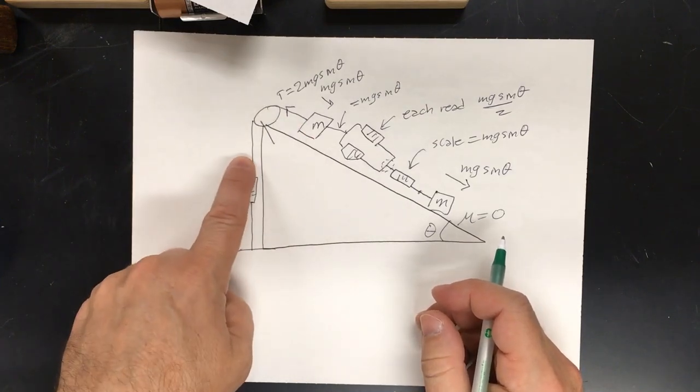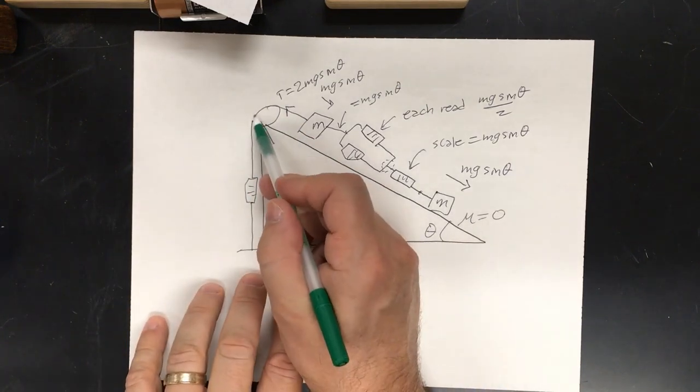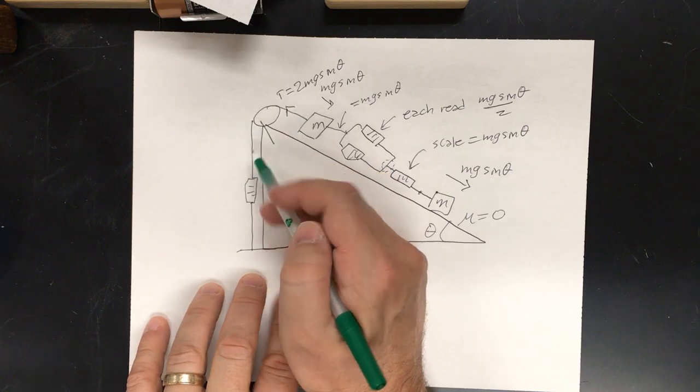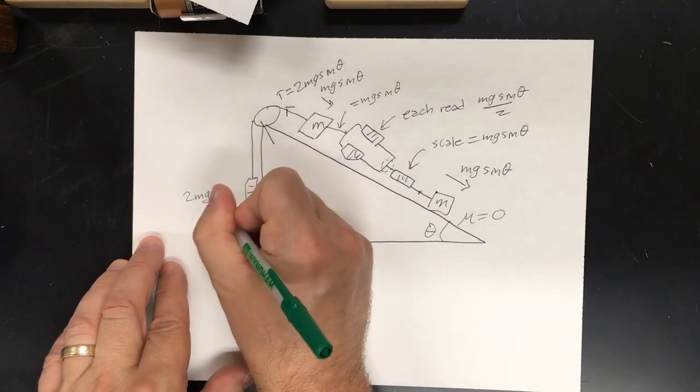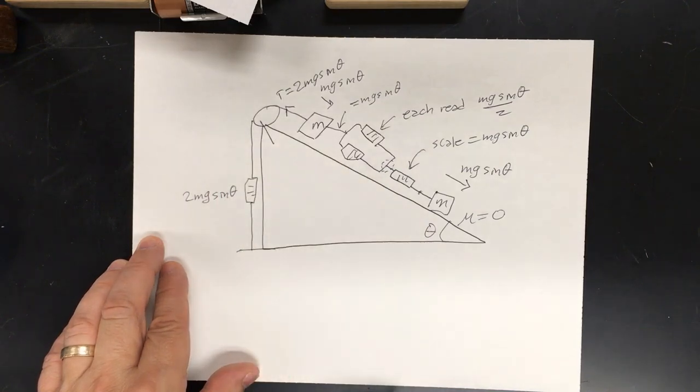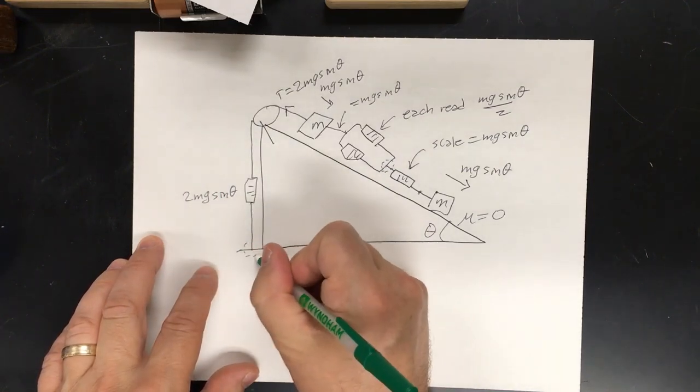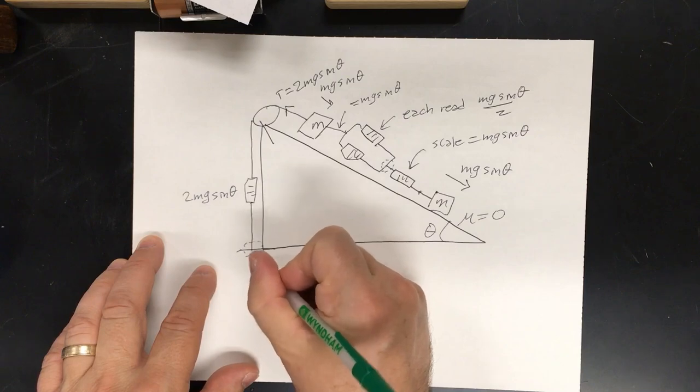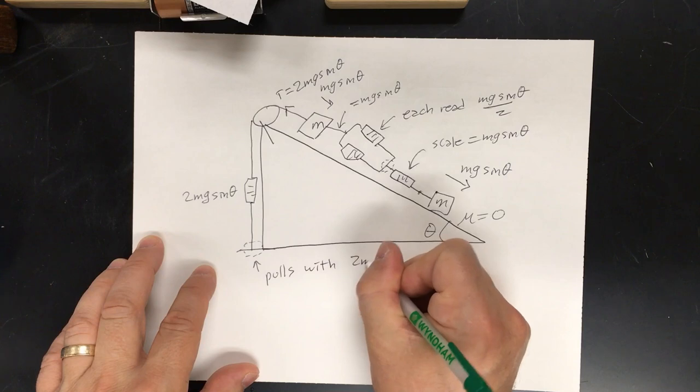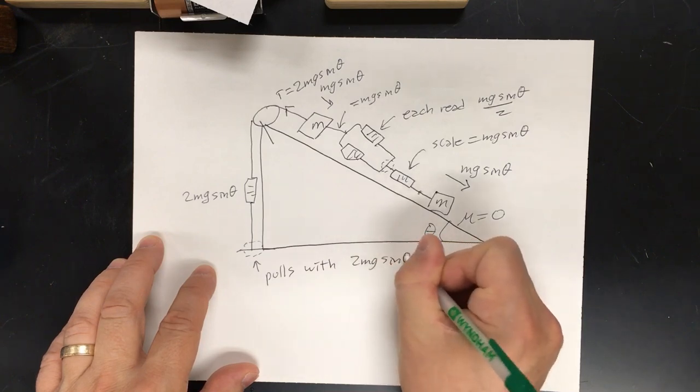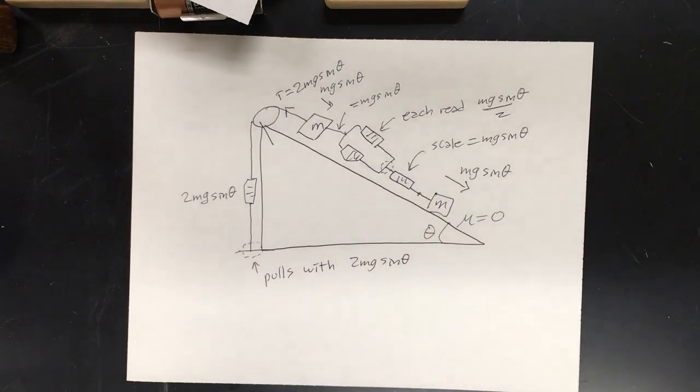Follow the rope. The tension of the rope is the same everywhere. If you take this point, it must be two mg sine theta, two mg sine theta. So, this one reads two mg sine theta. And, the attachment point at the bottom pulls or attaches with two mg sine theta. That's how you do ropes, how you do spring scales in ropes and what they read in static equilibrium.